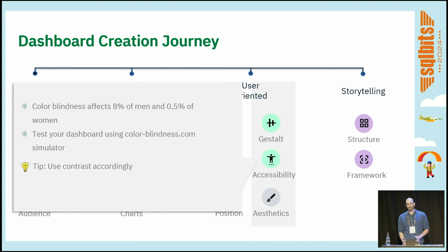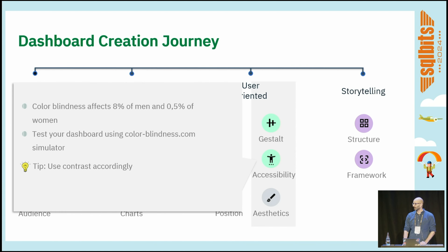Accessibility recently came to my attention. Apparently 8% of men and 0.5% of women have some kind of color blindness. If you're wondering how your report is perceived by people with this condition, head to colorblindness.com — you can upload a picture of your report and simulate different types of color blindness. The main way to tackle this is using contrast, and Power BI also has accessibility themes out of the box to easily solve this.